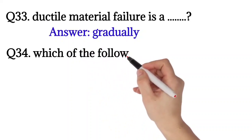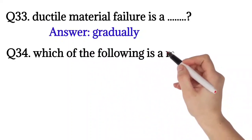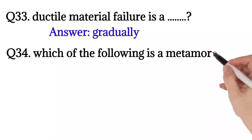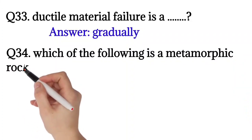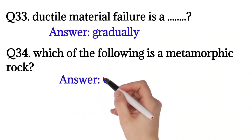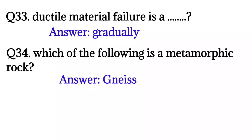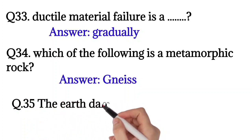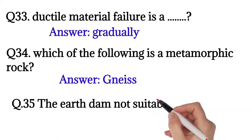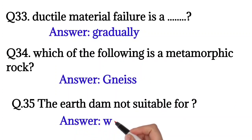Question number 34: Which of the following is a metamorphic rock? The answer is gneiss. Question number 35: The earth dam is not suitable for wider site. The answer is wider site.